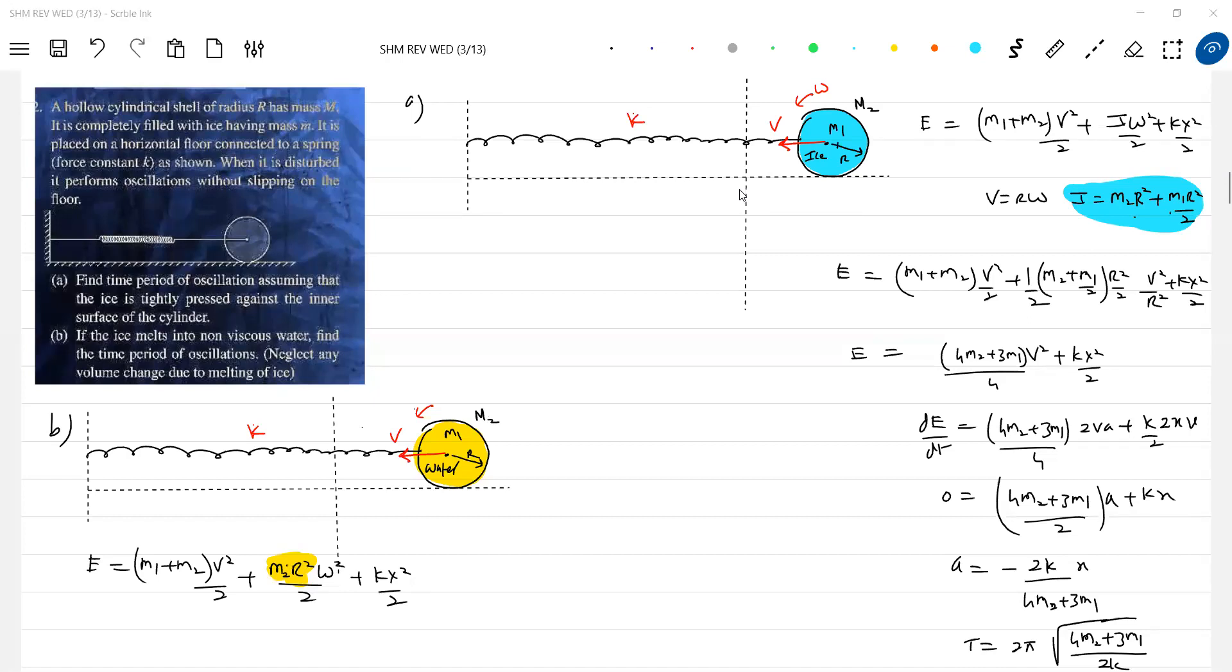If water is viscous, there'll be rotation, definitely there'll be rotation, because as the water moves there'll be friction between the layers of water.